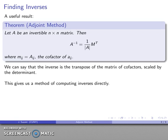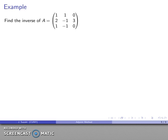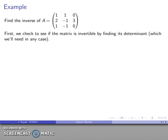This gives us a method of calculating inverses directly, although it's limited by the requirement that we find the matrix of cofactors. For example, let's find the inverse of a 3×3 matrix. First, I want to check that the matrix is actually invertible, so I need to find the determinant, which we'll need in any case.